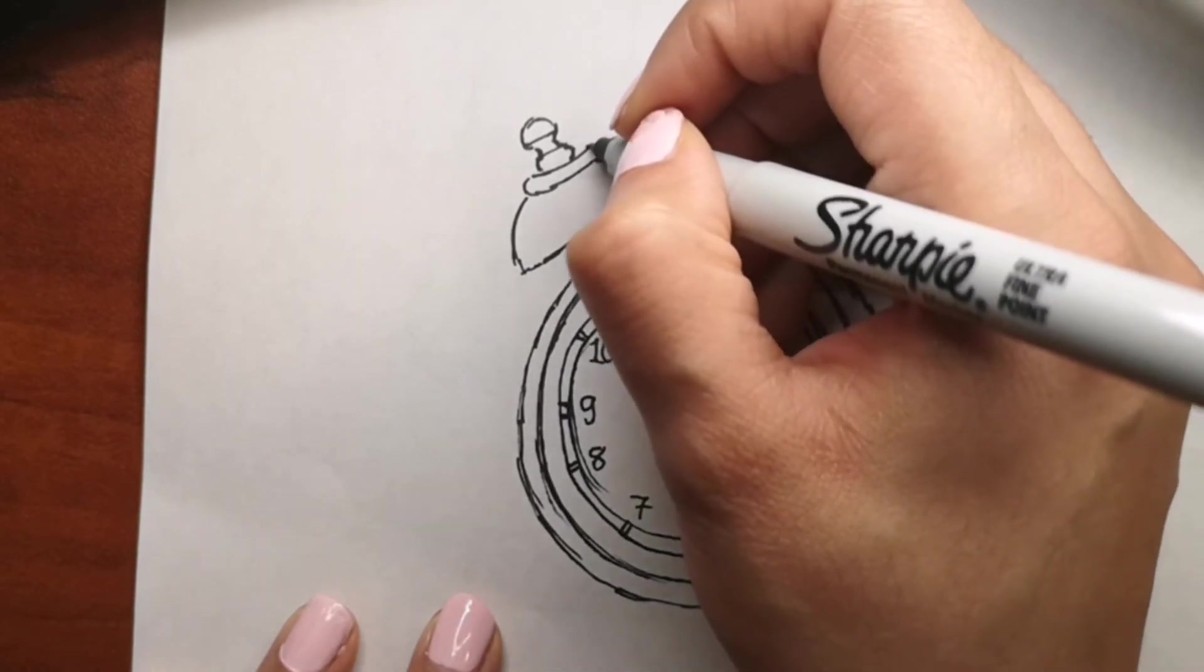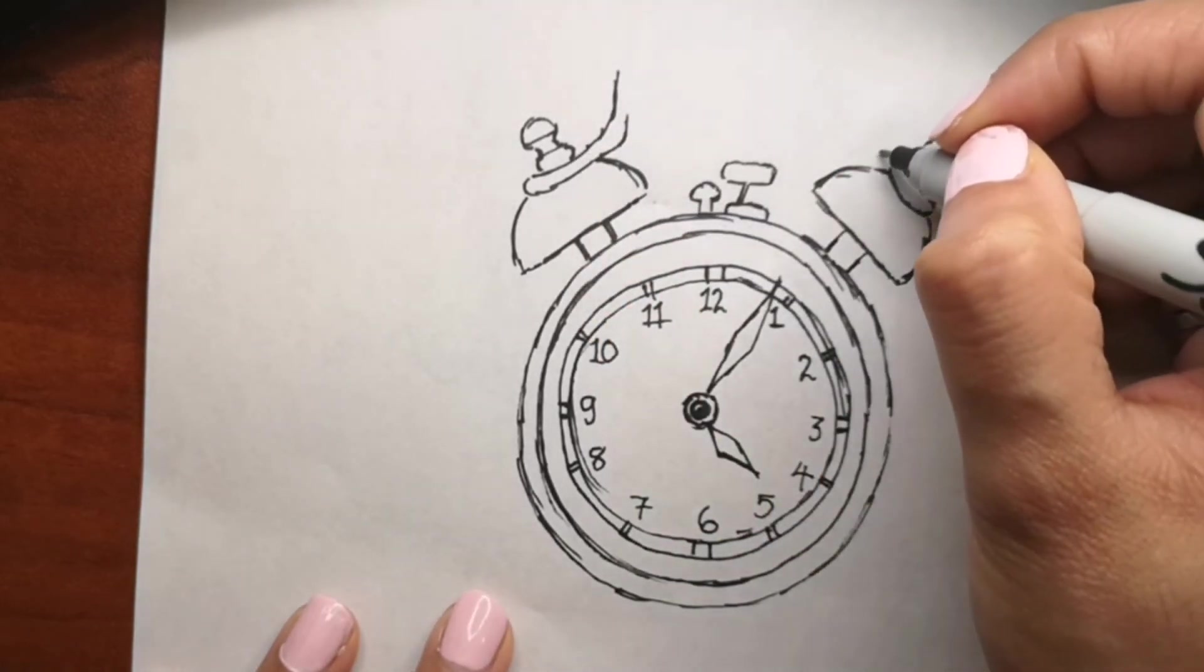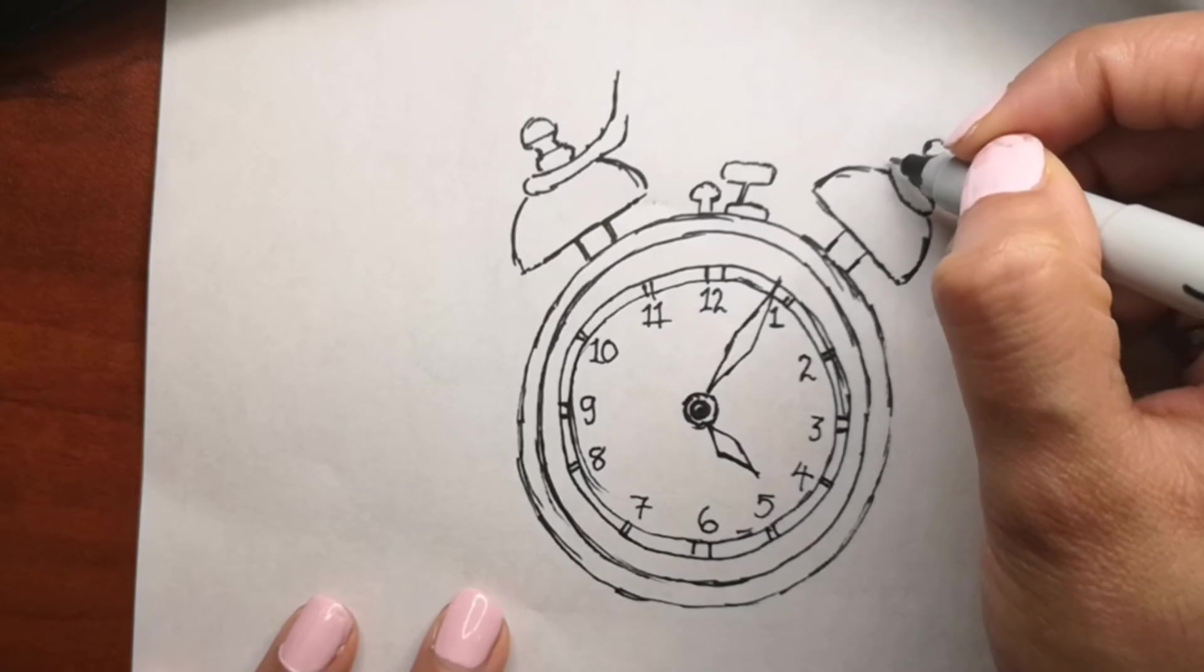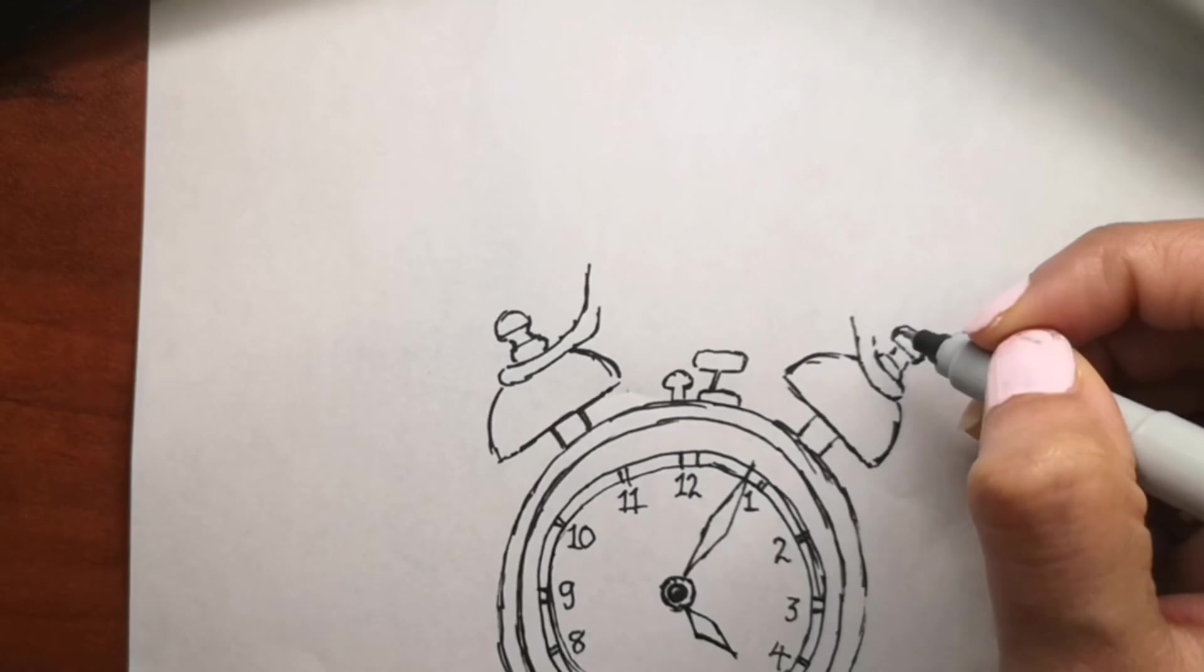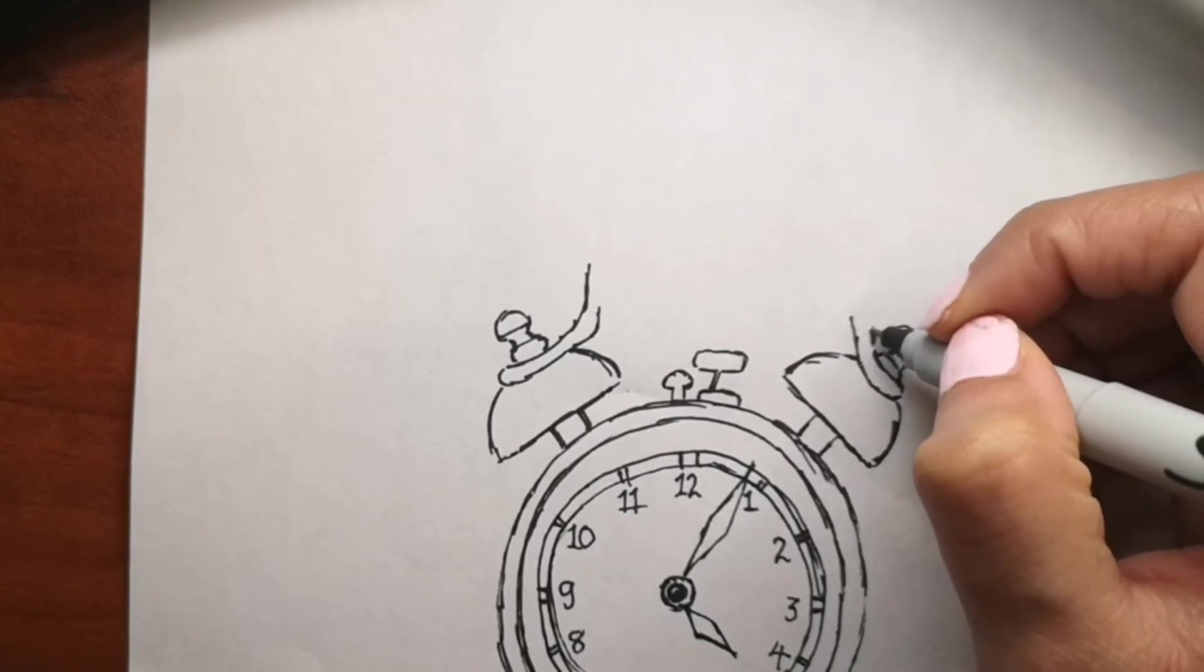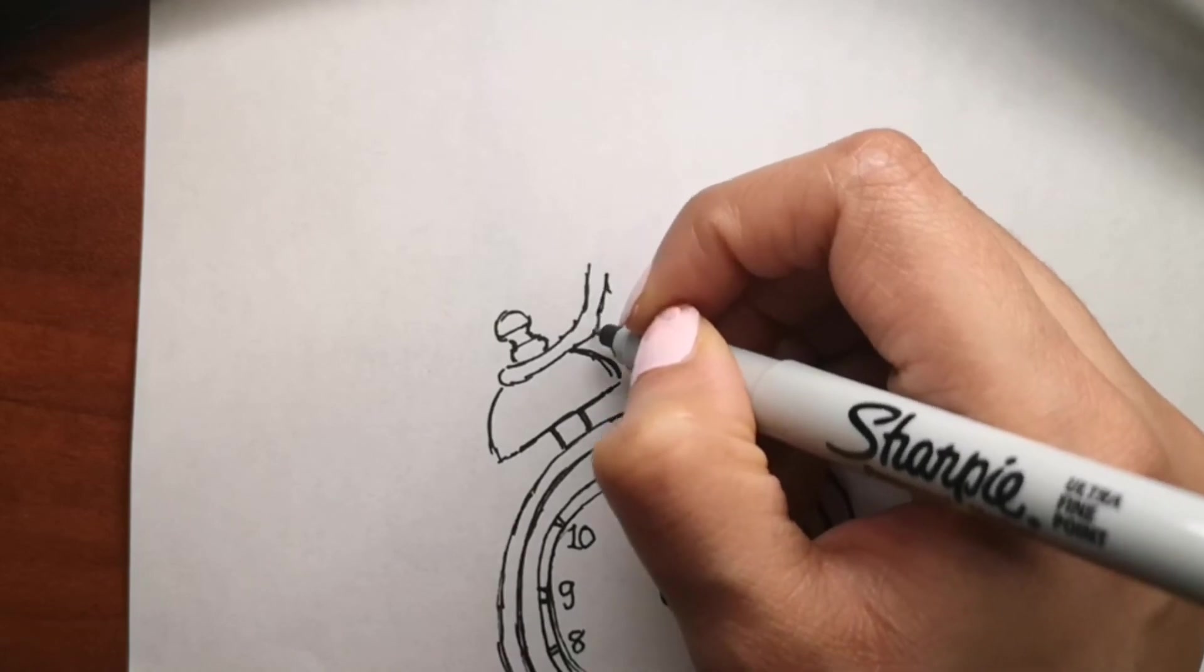Pennies are used to adjust the time in London's Big Ben clock tower. A single penny can change the pendulum center of mass and alter the time by 0.4 seconds per day. These are very interesting facts.